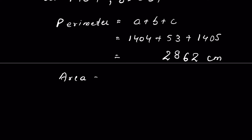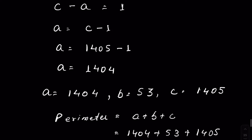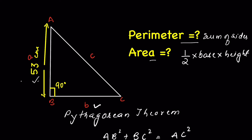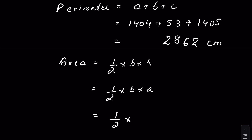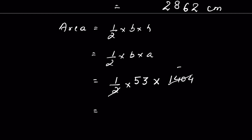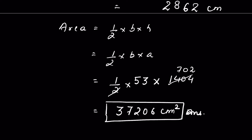The area of the triangle is half into base into height. Base is b equals 53 and height is a equals 1404, so area equals ½ × 53 × 1404, which gives 37,206 centimeters squared. What method did you think to solve this question? Let me know in the comment section. Thanks for watching.